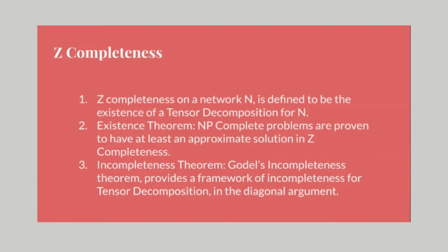Z-completeness is considered in the context of model theory and approximation theories, observed in NP-complete problems. Incompleteness with prime numbering, similar to Gödel's incompleteness of provability, is also defined. Several examples of architectures similar to ResNet, convolutional architectures, and generative AI are presented to illustrate CP, Tucker, and other methods of tensor decomposition to improve efficiency in resource and time.